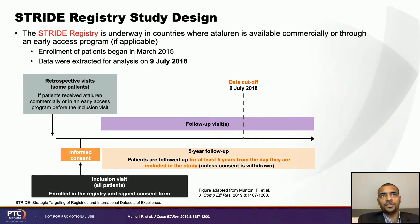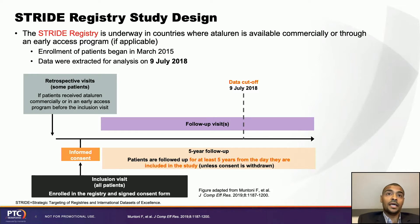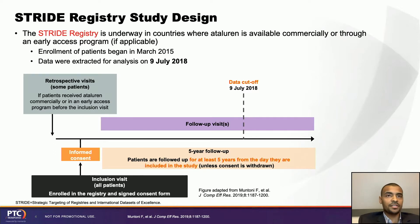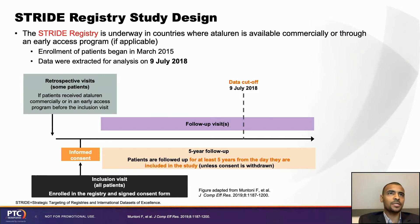The STRIDE registry is the first and largest real-world study for nonsense mutation DMD patients. STRIDE has been active for more than five years, starting in March 2015. We are committed to following boys in this registry for a minimum of five years, with an expected completion through 2025 — that's ten years of following these boys. The data I'll show reflects how the boys are doing as a group as of July 9th, 2018.